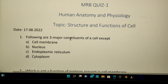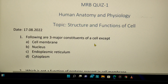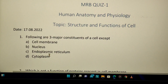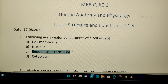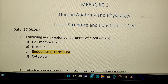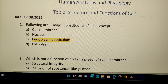First question: which of the following are three major constituents of a cell, except? The three major constituents are cell membrane, nucleus, and cytoplasm. The endoplasmic reticulum is not a major constituent — so that is the answer.